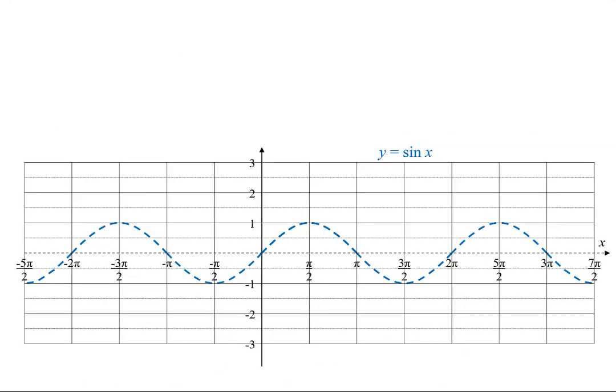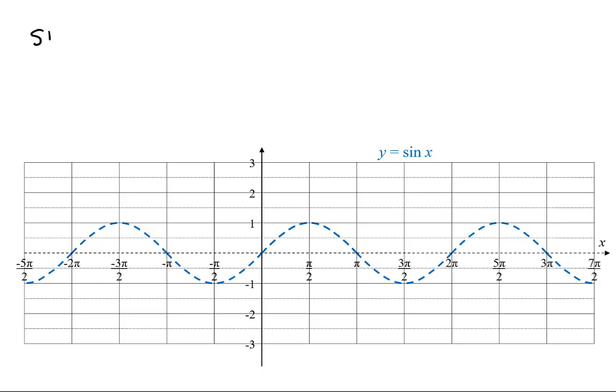First, we look at the sine. You can write sine squared in two different ways: sin²x, or you can put the sin in parentheses and the 2 as an exponent outside. Either way, they mean the same thing, multiply the sine of x by the sine of x.